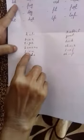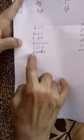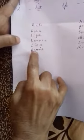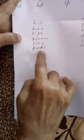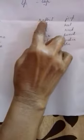Lion. L, I, O, N — Lion. Two vowels. Panda. P, A, N, D, A — Panda. Two vowels. R, A, B, B, I, T — Rabbit. Two vowels.